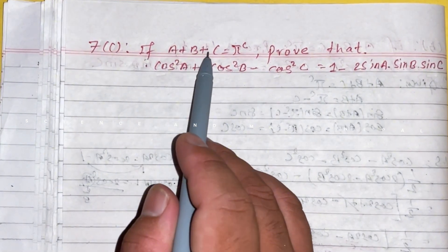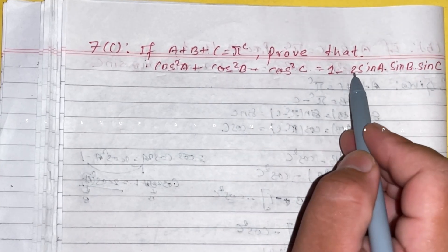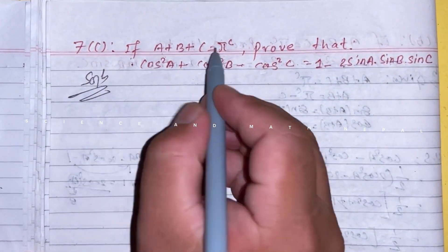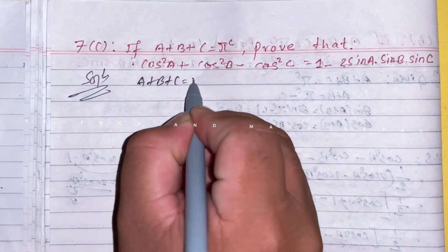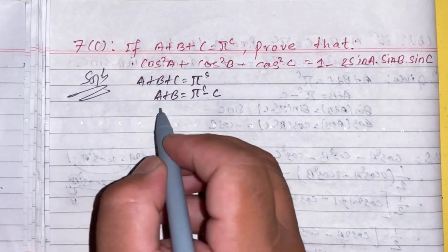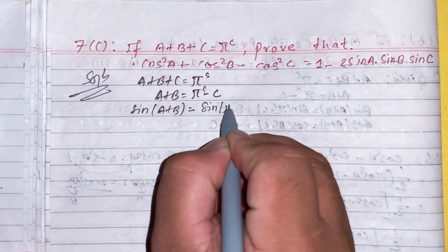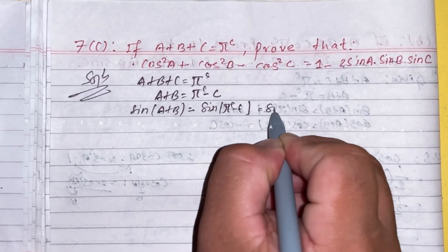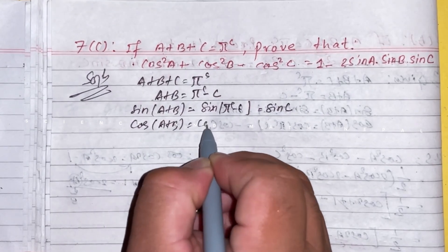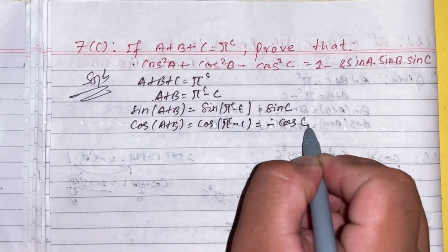If a plus b plus c equals pi radian, prove that cos square a plus cos square b minus cos square c equals 1 minus 2 sin a sin b cos c. Solution: given a plus b plus c equals pi, so a plus b equals pi minus c. Taking sin on both sides: sin(a+b) equals sin c. Taking cos on both sides: cos(a+b) equals minus cos c.